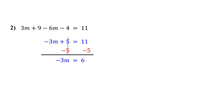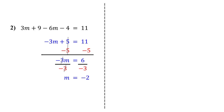This is now just a one-step equation. So finally, get m by itself by dividing both sides by negative 3. On the left, the negative 3s cancel out, leaving just m. On the right, we get negative 2. So the solution is m equals negative 2.